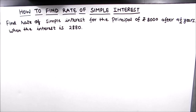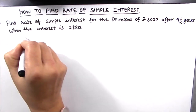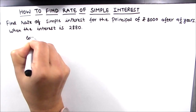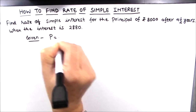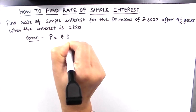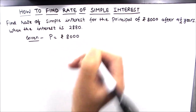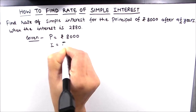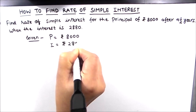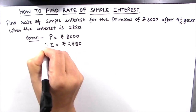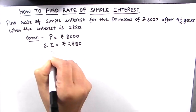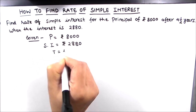The first example is: find the rate of simple interest for a principal of rupees 8000 after four and a half years when the interest is 2880. So let us first write what is given in the question. Given is principal amount as rupees 8000, interest is given as rupees 2880 — which is simple interest — and time is four and a half years.